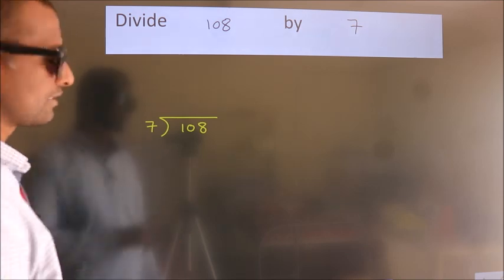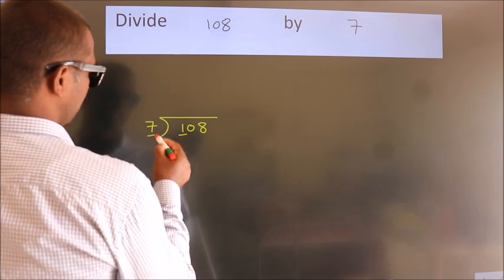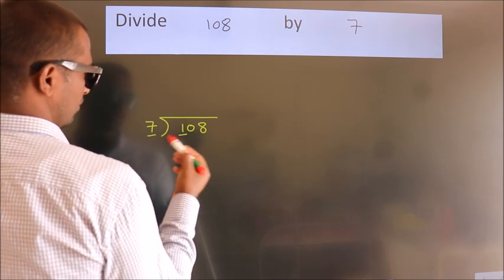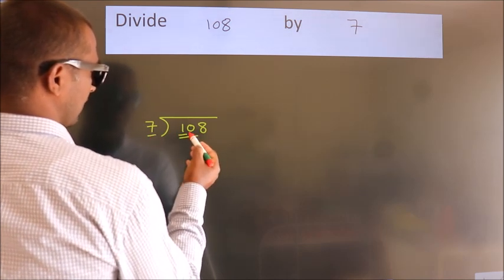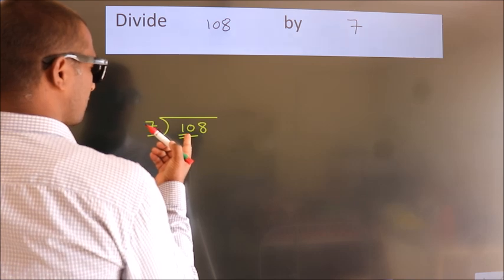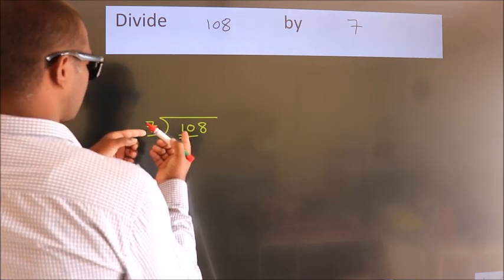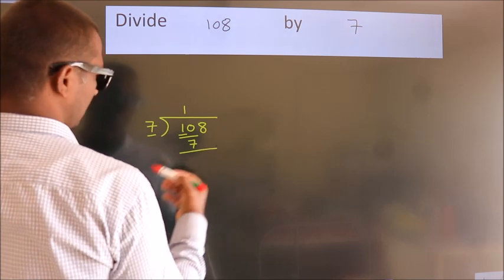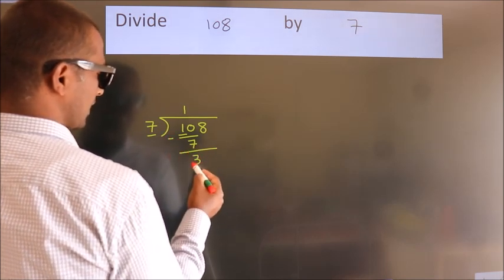Next, here we have 1, here 7. 1 is smaller than 7, so we should take two numbers: 10. A number close to 10 in the 7 table is 7 ones, which is 7. Now we should subtract. We get 3.